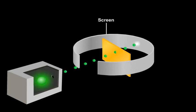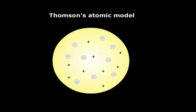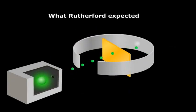According to Thomson's atomic model, an atom consists of a positively charged sphere with electrons embedded in it. So Rutherford expected that almost all the alpha particles would pass straight through, and only small deflections would be observed if any.